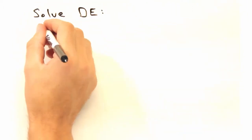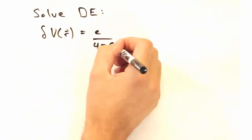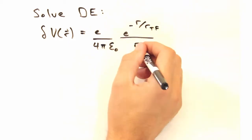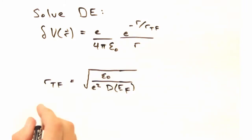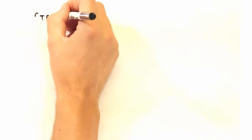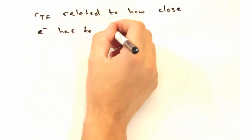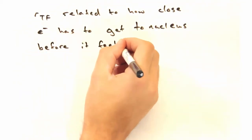Rather than solving it out, here's the solution to how the potential changes with this perturbation. The potential varies with R, and we introduce this term R sub TF, where the TF comes from Thomas Fermi. RTF is related to how close an electron has to get to the nucleus before it feels a non-zero potential gradient.